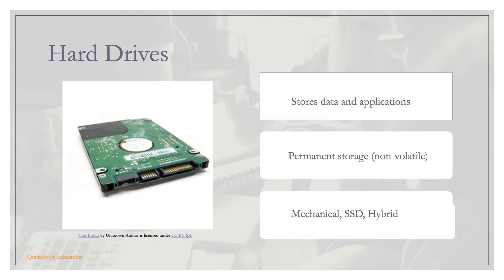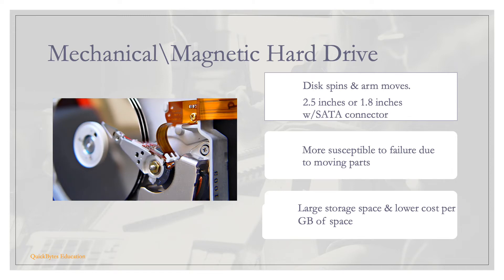Laptops use hard drives to store data and applications; the data remains intact even when the device is shut down. Three types of hard drive storage are mechanical hard drives, SSD, and hybrid. Mechanical or magnetic hard drives have disc platters that spin and a mechanical arm that reads and writes data. These discs can be 2.5 or 1.8 inches and typically have SATA connectors. Their moving parts make them more susceptible to failure, though they offer larger storage capacity and lower cost per gigabyte.